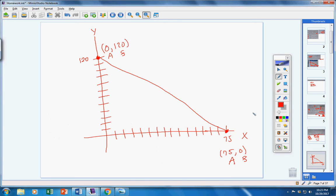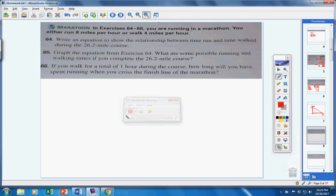Problems 64 through 65. You are running in a marathon. When you run, you go 8 miles an hour. When you walk, you go 4 miles an hour. Write an equation to show the relationship between the time that you run and the time that you walked. We'll use R for run and W for walk.